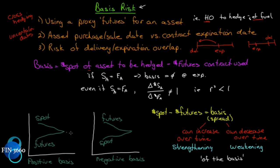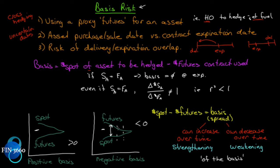You might have a situation where you expect the basis to decrease over time, but it actually increases because the futures price fails to track the spot price. Looking at the charts: if the spot price is above the futures price, we have a positive basis — spot minus futures is greater than zero. If the futures price is above the spot price, spot minus futures gives something less than zero — that's a negative basis. The spread between the two curves is what we refer to as the basis, and it can increase or decrease over time.